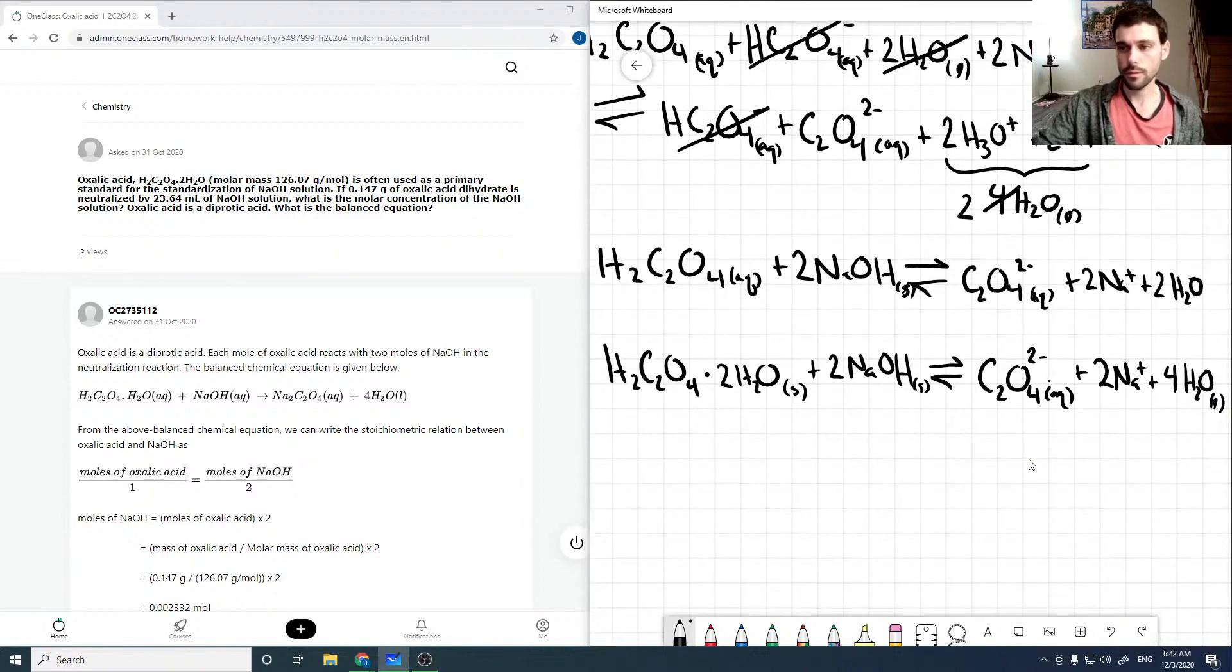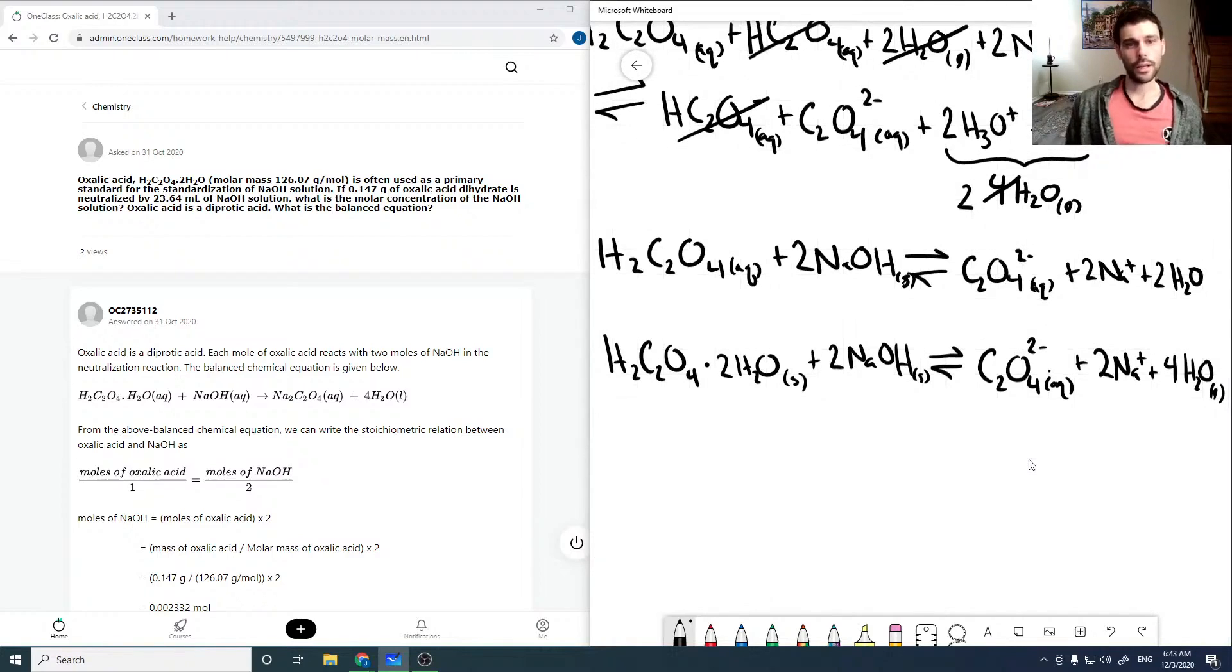So that would be our balanced chemical equation. And so getting back to the question, if we have 0.147 grams of our oxalic acid, and it's neutralized by 23.64 milliliters of sodium hydroxide, what is the molar concentration? So our mass, that's our volume, our molar mass in this case is 126.07.